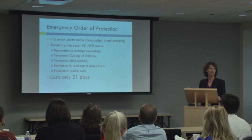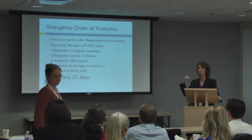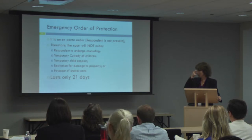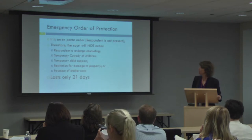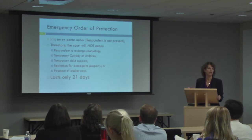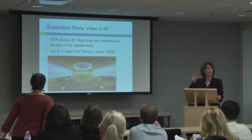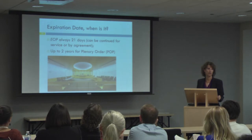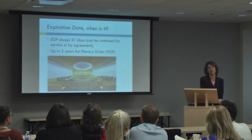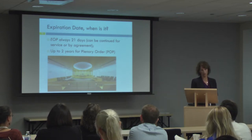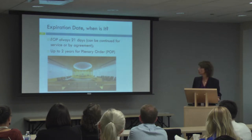The emergency order of protection is ex parte, meaning the other side isn't there and has no advance notice — which is unusual for court proceedings, but necessary because she's concerned for her safety. The emergency order only lasts 21 days — that's the maximum period for an ex parte emergency order. There are certain remedies she cannot get in an emergency order, such as child support or financial reimbursement for the tires. But she can get all the stay-away provisions and exclusive possession of the home. The plenary order — what Illinois calls a permanent order of protection — is generally up to two years.